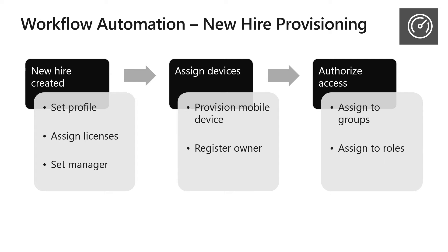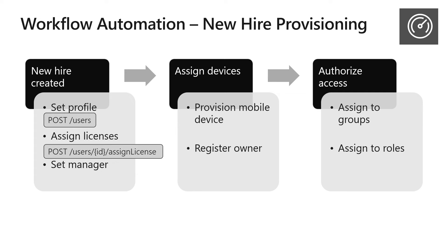Now we'll dig into a few specific workflows and I'll show you some examples of the calls that could be made to Microsoft Graph for each scenario. Imagine your company has a series of standard onboarding steps that occur every time a new user is hired. Instead of having a human walk through those steps manually, Microsoft Graph can help automate this. When the new hire comes in, you can create a user object by posting to the /users endpoint and set some basic attributes. You can also assign them some licenses, set their manager, and set up a device.